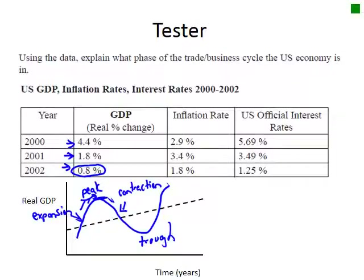Watch out for these kinds of data questions, because a lot of students will say that because the rate of growth of GDP is slowing down, we must be in a contraction — which is false. The economy is still producing more than it produced the year before, albeit at a slower rate.